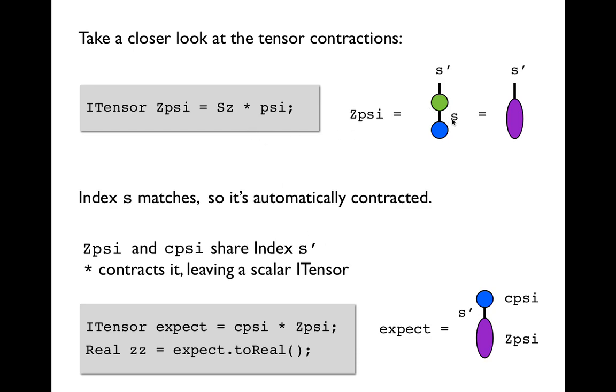So recall that our Sz operator was created with two indices s prime and s. And then our wave function psi had one index s. So when we call the star operator between Sz and psi, it will automatically see that they have a matching index s and contract over this index. s prime will remain uncontracted because it doesn't match any other index on psi. So that will be the only remaining index. We can store that in a temporary called zpsi.